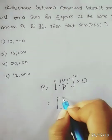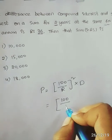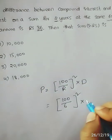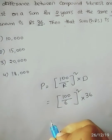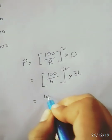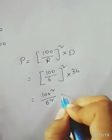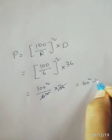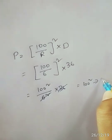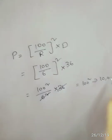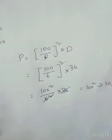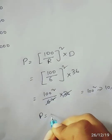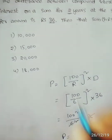Using the formula with 100 divided by R: the rate is 6% and the number of years is 2. The difference is 36. So we calculate: 100 squared divided by R squared, then multiply by D. That gives us 10,000 divided by 36 times 36, and the answer comes out to 10,000.